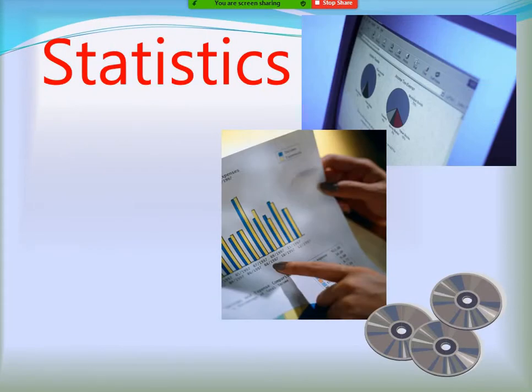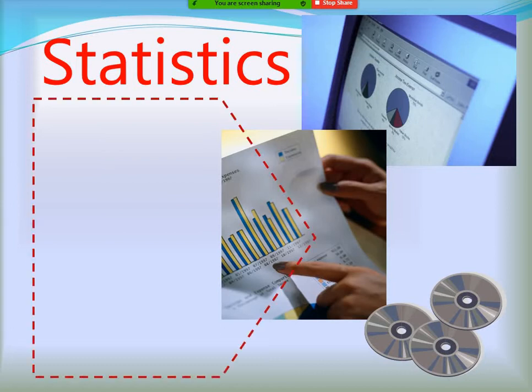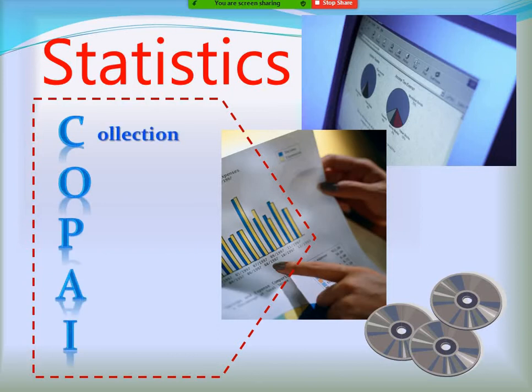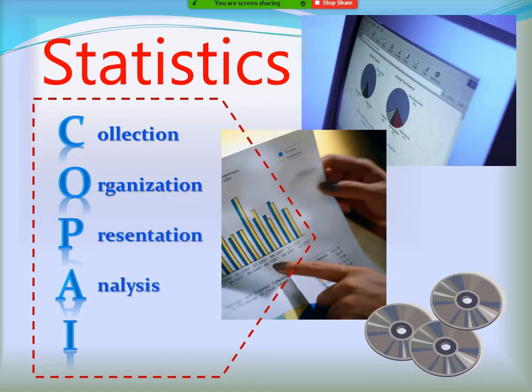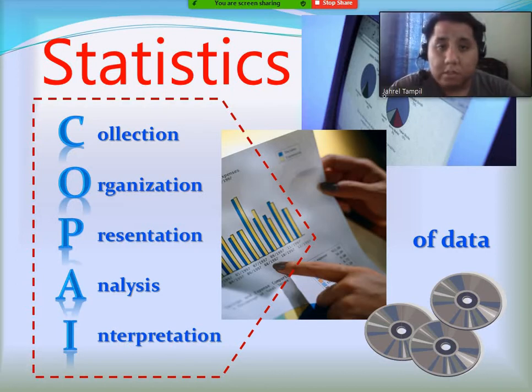We can remember easily the definition of statistics. We can use the acronym COPI, which would mean collection, organization, presentation, analysis, and interpretation of data. So, as the name implies, we're going to deal with data here. This is the mathematics wherein we're dealing with data that we have gathered.